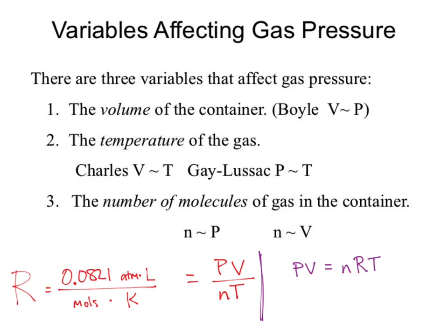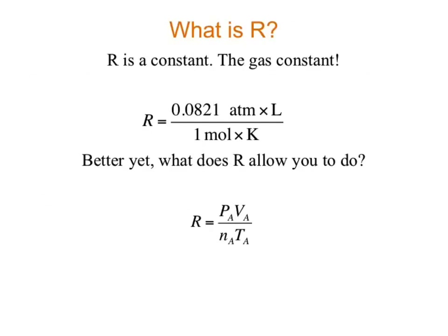The relationships identified by Charles, Boyle, Gay-Lussac, and Avogadro are fantastic — but if you memorize PV = nRT, all of them become obsolete, because all their rules are embedded in PV = nRT. So PV = nRT is really, really powerful, and you should spend the time to memorize it.